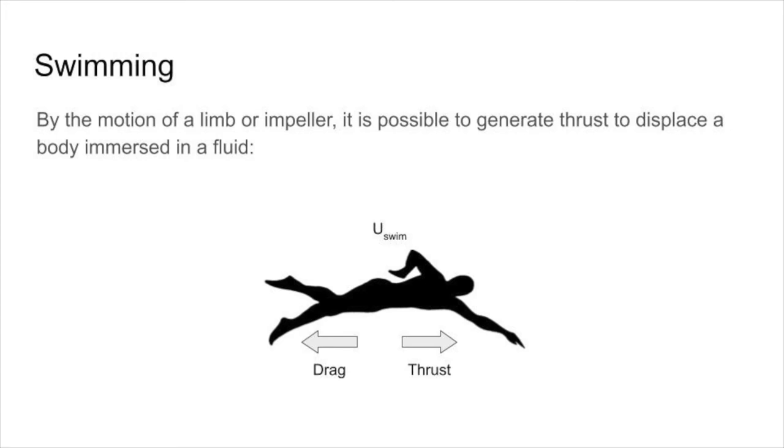Swimming on a human scale can be modeled simply, as depicted here. By the motion of a limb or impeller, such as our arm moving through water in a pool, it is possible to generate thrust. So long as the force of thrust is greater than the drag force acting upon a given body, that body will be able to move through the fluid.